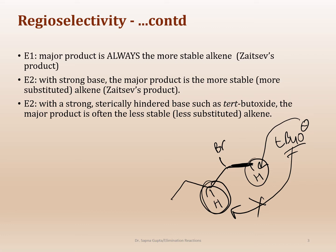In some cases, you can target your product - you can say this is the only thing I want. With E2, this is possible. With E1, sometimes it's not possible because E1 is carbocation driven and there's not much you can do about that. With E2, you can actually have a little bit more selectivity, saying you really want the Hofmann product and not the Zaitsev's product. That's the advantage that you have for E2 versus E1. E1 will always give you the Zaitsev's product as the major product, always.